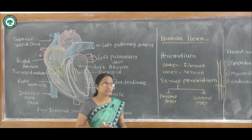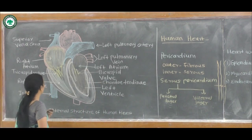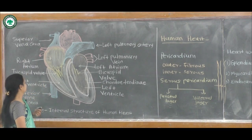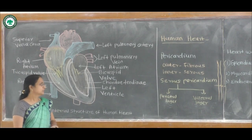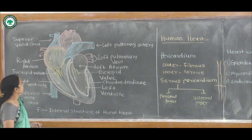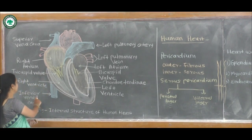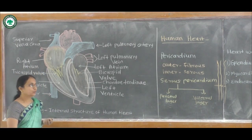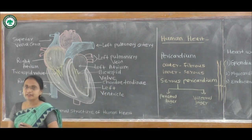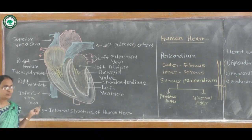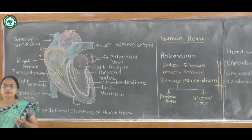The atria are called receiving chambers because they receive blood from the body parts and send it to the lungs for purification. The ventricles are called distributing chambers because the right ventricle passes blood to the lungs for purification, and the left ventricle passes purified blood to all body parts. The right atrium receives deoxygenated blood via the inferior vena cava and superior vena cava, which collect deoxygenated blood from different parts of the body.